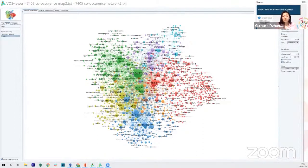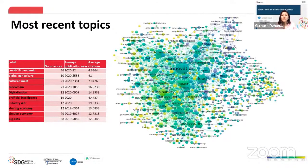In the overlay visualizations, the color of the keywords indicates the average year in which publications with that keyword appeared. In the case of the yellow cluster, it indicates a period of 2019–2021. Looking at the 10 most recent keywords in the overlay visualization, three keywords we want to underline are: COVID-19, with the most recent average publication year of 2020.82, and then digital agriculture and cultured meat.